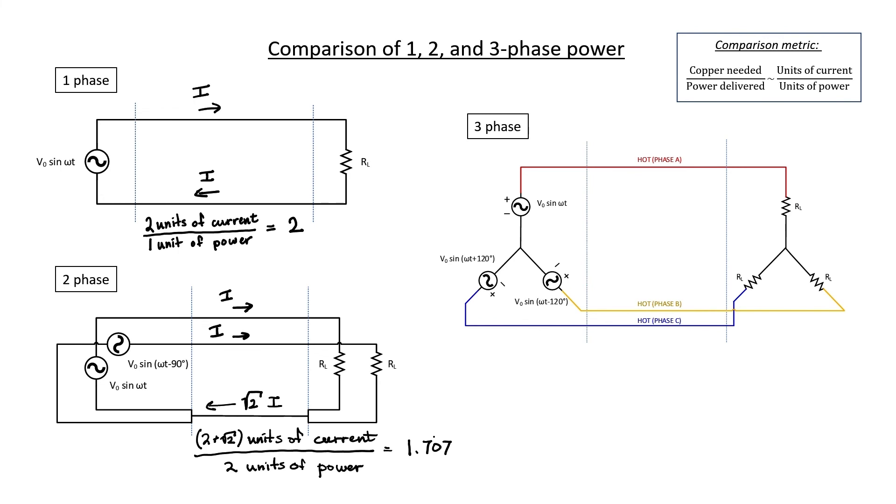Let's move on to the three-phase case. We don't have a neutral at all, so I have three units of current flowing through the three hots, zero units of current flowing back through the neutral, and I have three units of power delivered to the three different load resistors. Looking at these three numbers, I can see that three-phase is best. It's the smallest number. Not only is three-phase the best, it's theoretically the best possible case.